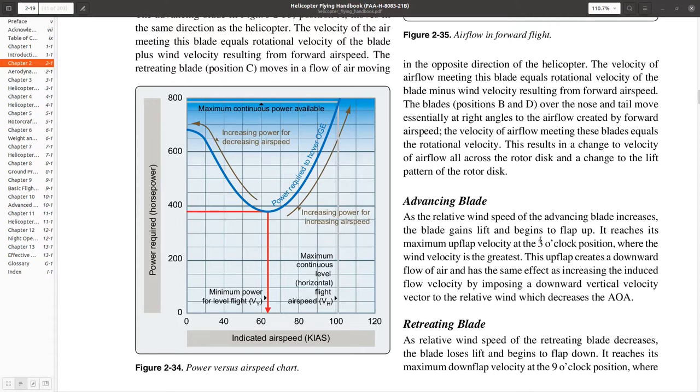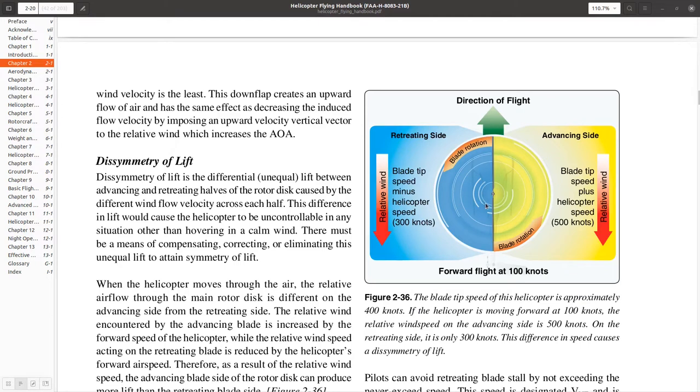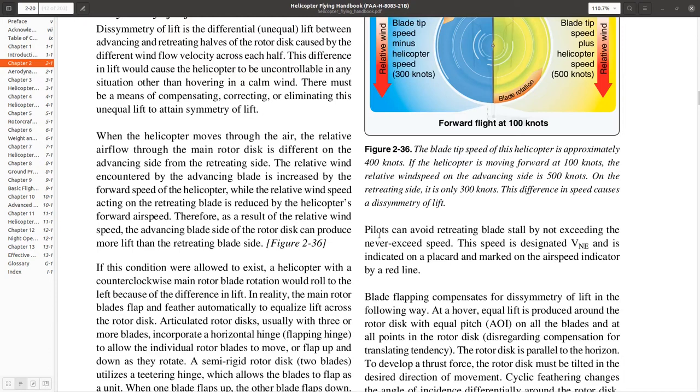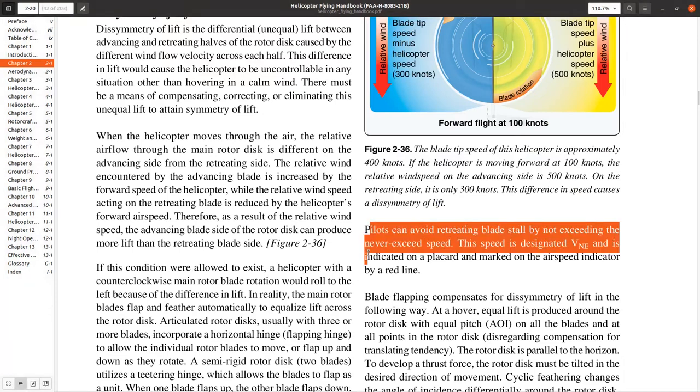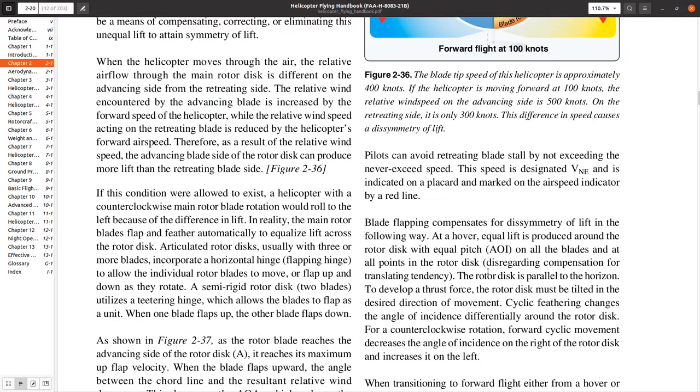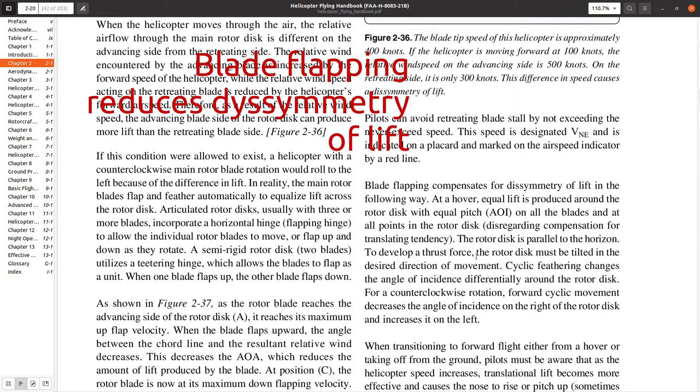Okay, so this is a problem. We have this dissymmetry of lift. So what are we going to do? There has to be a way to account for this. We want to avoid this retreating blade stall. How do we do that? We avoid the never exceed speed. That's part of it. But how can the helicopter help us out a little bit? And one of the ways that that is done is by something called blade flapping.